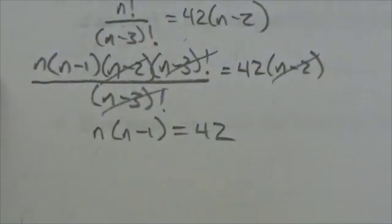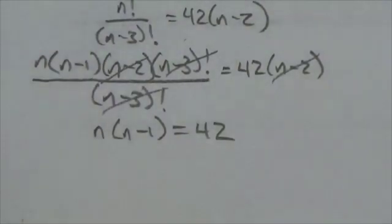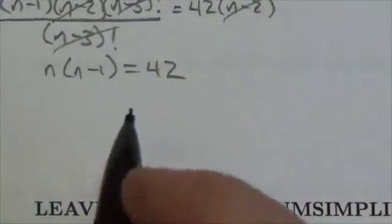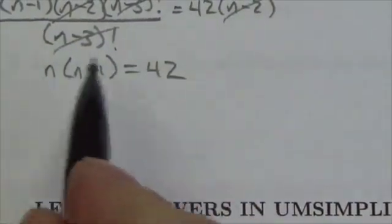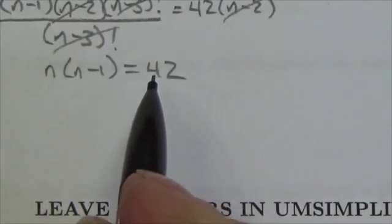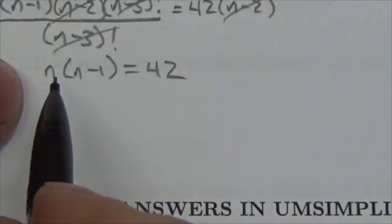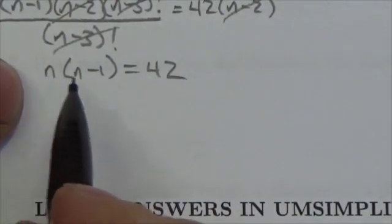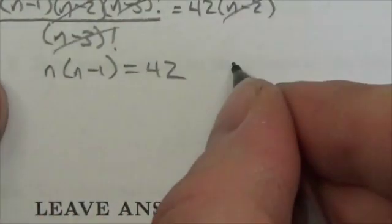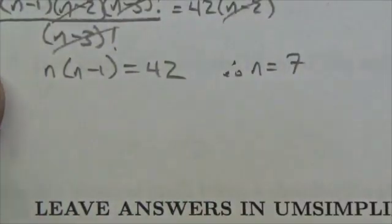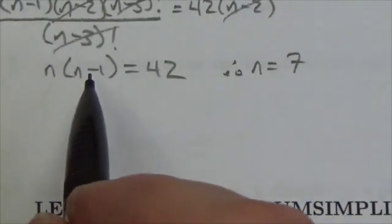Now I'm left with n times (n minus 1) equals 42. At this point I can tell you that n must be 7. Give me two factors of 42 that differ by 1 — it has to be 7 and 6. Since 7 minus 1 is 6, therefore n equals 7.